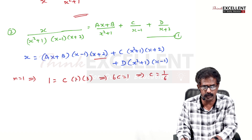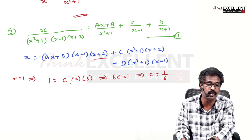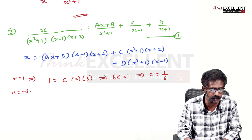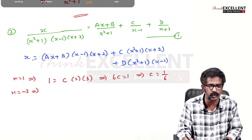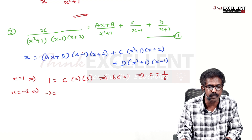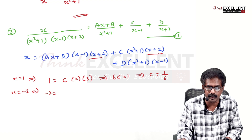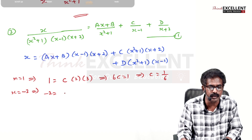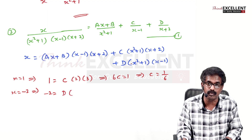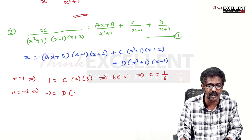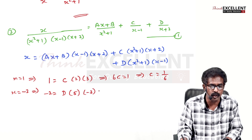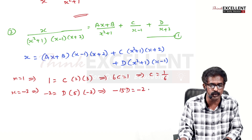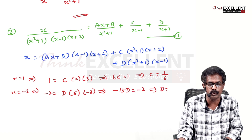Now make (x+2) = 0 by putting x = -2. Left side: -2. Right side: first and second terms are 0. Only the D term: D((-2)²+1)(-2-1) = D(5)(-3) = -15D. So -2 = -15D, cancel negatives, giving D = 2/15.